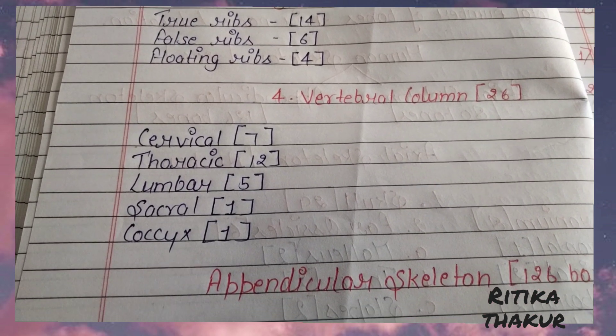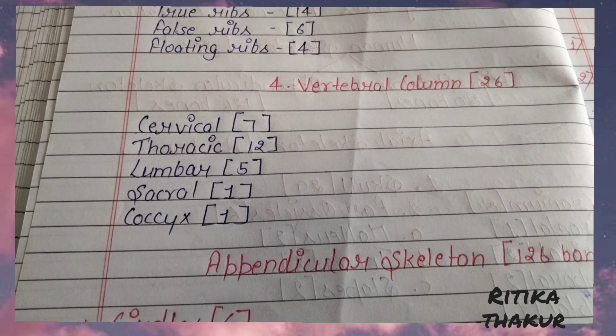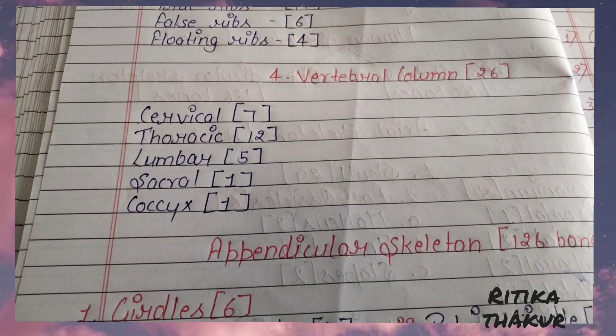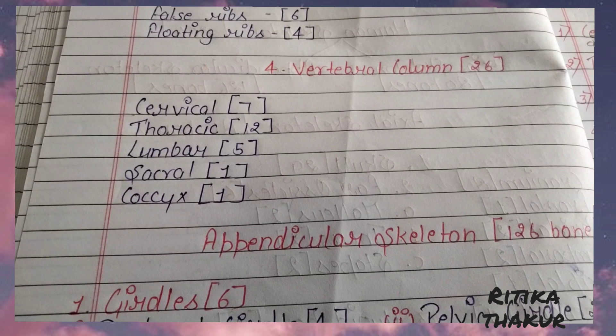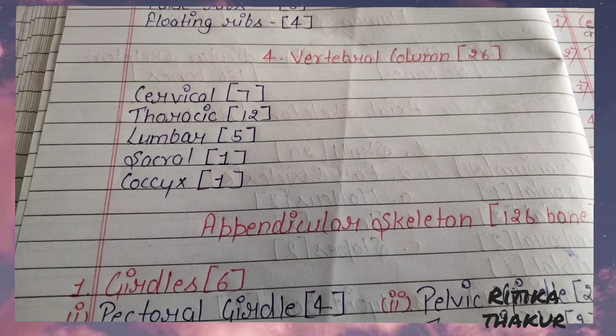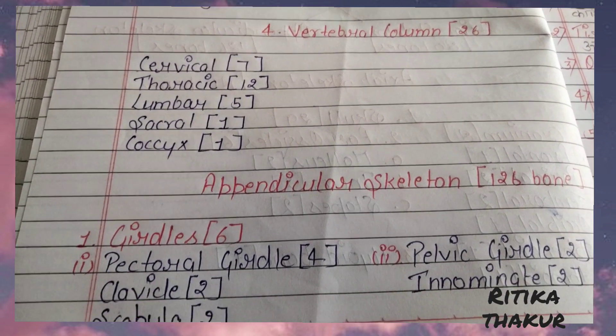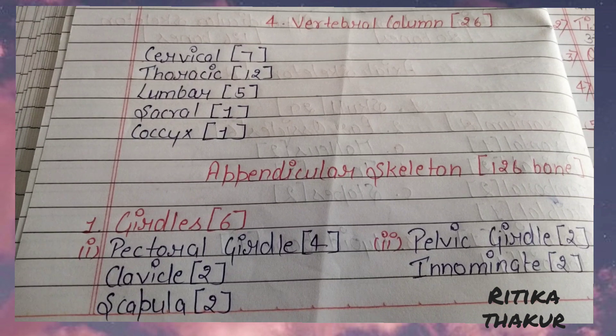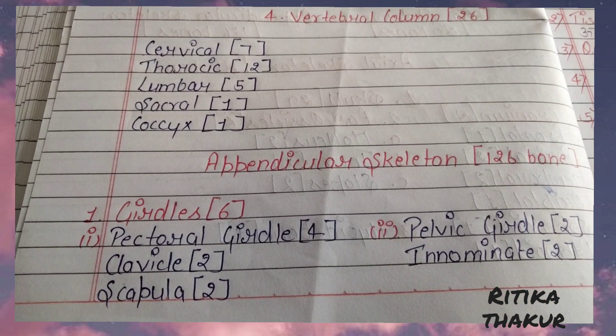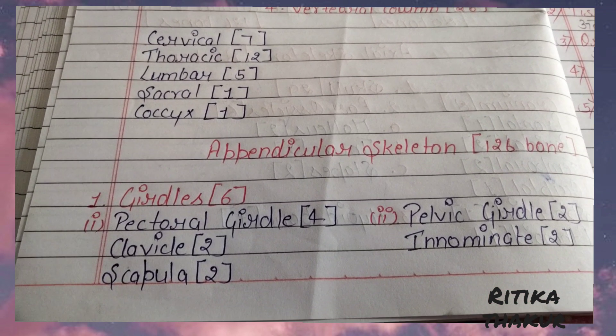Appendicular skeleton 126. Girdles 6: Pectoral girdle 4, Clavicle 2, Scapula 2. Pelvic girdle 2: Innominate 2.